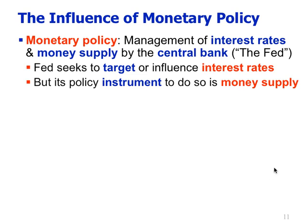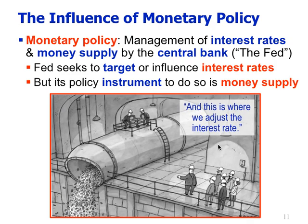What the Fed typically does is target or influence interest rates. But although they directly control the discount rate — the rate at which they loan to banks — they don't have direct control over any other interest rates. So how do they influence interest rates? The instrument they use is the money supply. They increase or decrease the money supply to raise or lower interest rates.